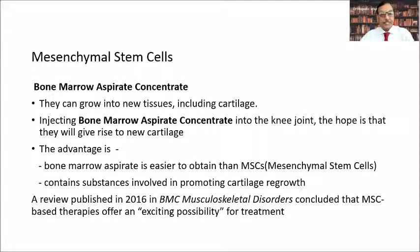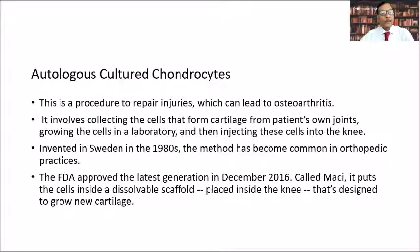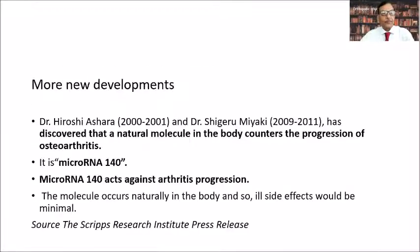Bone marrow aspirate is easier to obtain and contains substances involved in promoting cartilage regrowth. There can be autologous cultured chondrocytes — this involves collecting the cells that form cartilage from the patient's own joint, growing them in a laboratory, and then injecting these cells into the knee. Researchers Dr. Hiroshi Yasuda and Dr. Shigeru Miyake discovered that a natural molecule in the body called microRNA-140 counters the progression of osteoarthritis. It acts against arthritis progression and occurs naturally in the body, so its side effects are minimal.